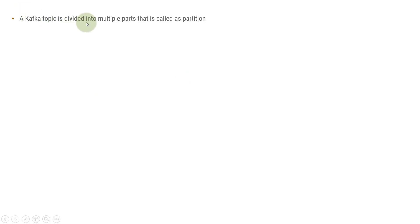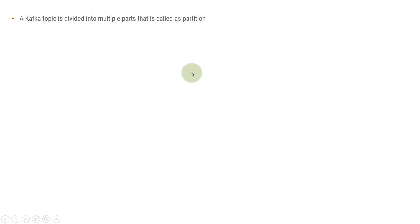A Kafka topic is divided into multiple parts and those are called partitions. In the previous video, we have seen what is a topic inside the Kafka ecosystem. If you go inside the topic, then that topic is divided into multiple parts and those parts are called individual partitions. Partitions can be considered as a linear data structure, just like an array. These are also called a commit log.